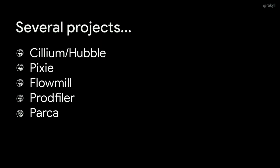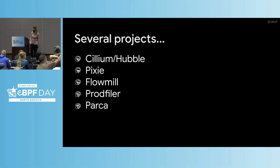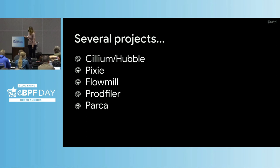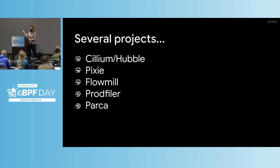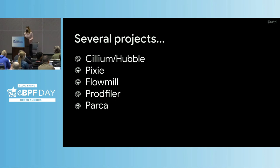I mentioned several projects — if you want to take notes: Cilium and Hubble do a lot of things. Pixie does so many. Flowmill was an earlier project that's been sort of merged into OpenTelemetry now. Profiler is a continuous profiler, and Parca, from one of the Prometheus maintainers, has just been released as a continuous profiler based on eBPF.